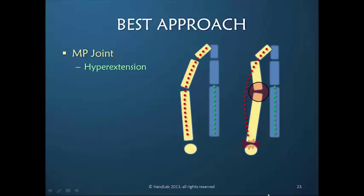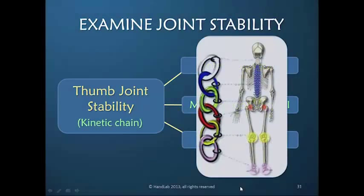MP hyperextension creates undesirable postures at the two other joints. It is no different from the kinetic chain of the weight-bearing lower extremities.